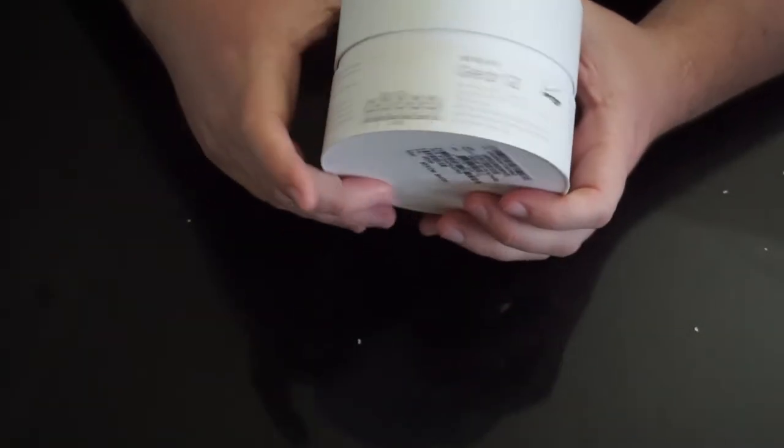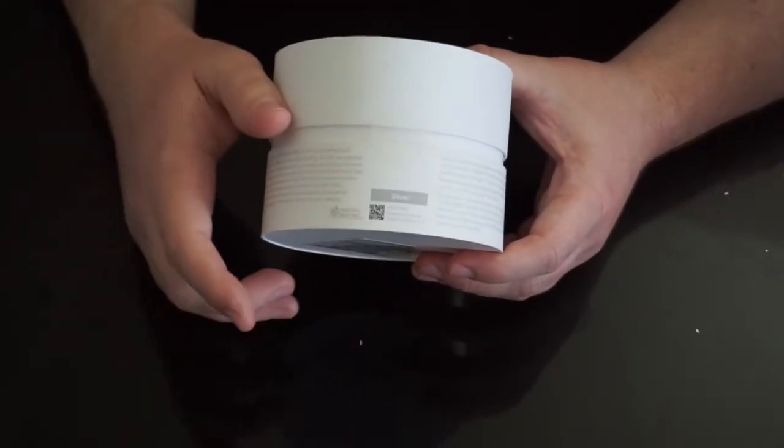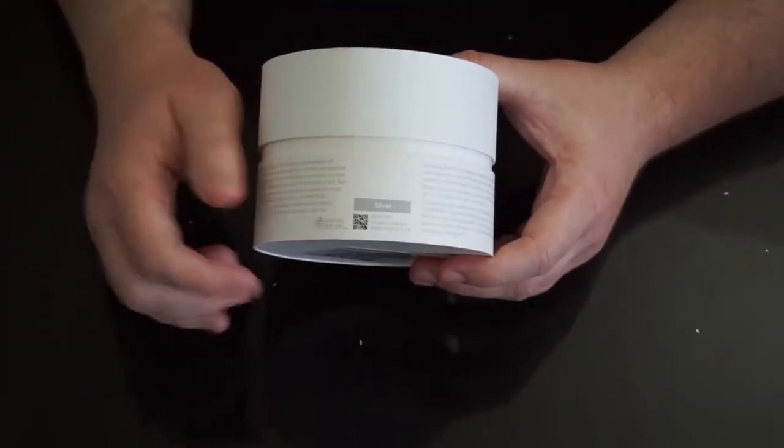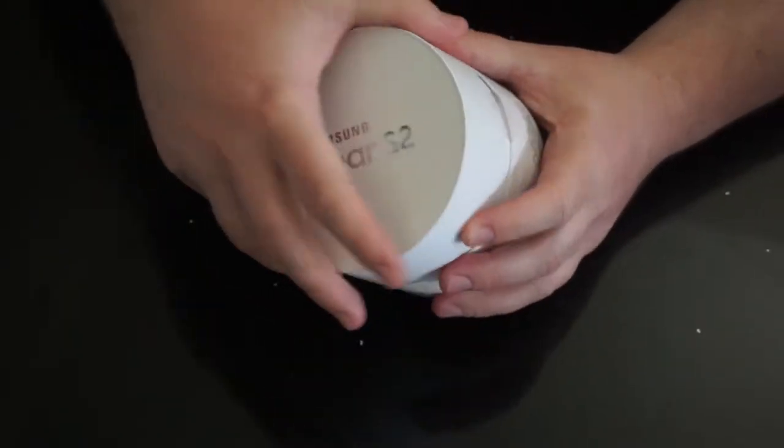I mean, obviously, it's a Samsung product, right? This one is the silver version. They also come in black and, I think, a darker gray. So a wide variety of colors if you like black. That's it for the box. So let's get into the goodies.